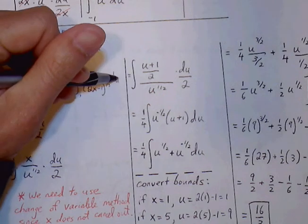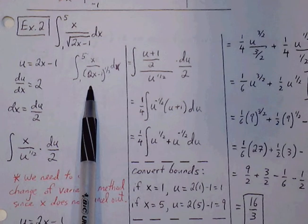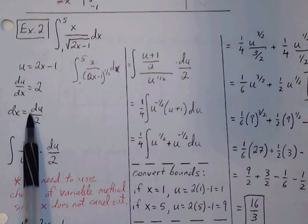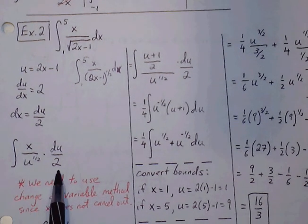du. Sorry, dx. So we can let our u value be 2x minus 1. Solve our final derivative, so du over dx equals 2. So dx is equal to du over 2. And we make our substitutions.